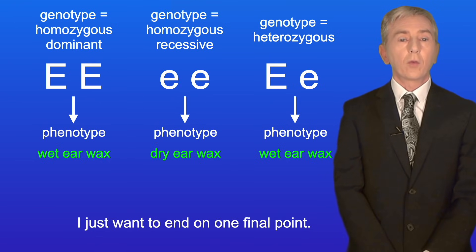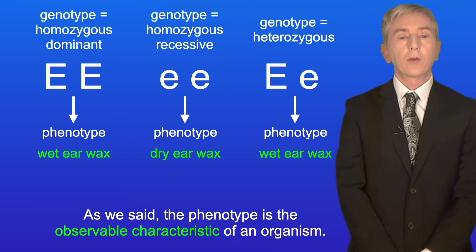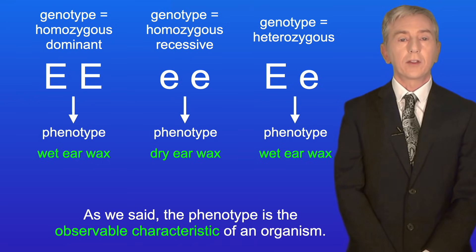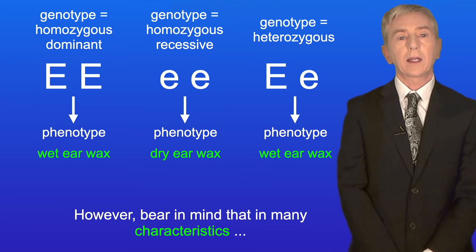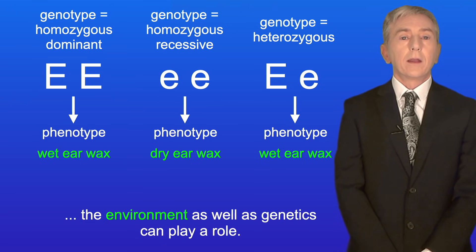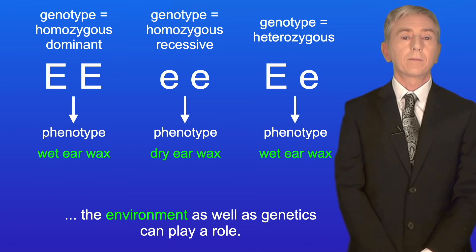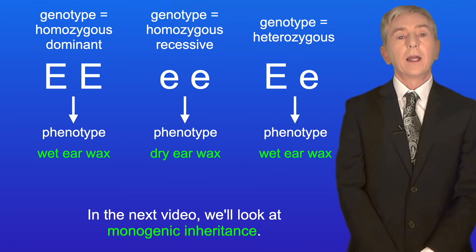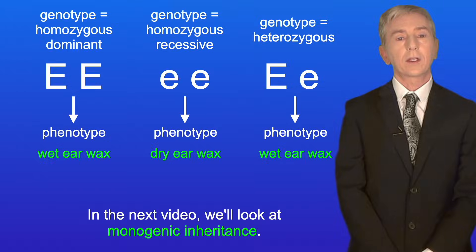One final point: the phenotype is the observable characteristic of an organism, but bear in mind that in many characteristics, the environment as well as genetics can play a role. In the next video, we look at monogenic inheritance.